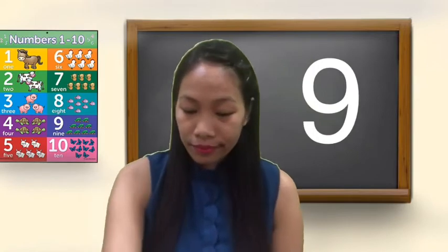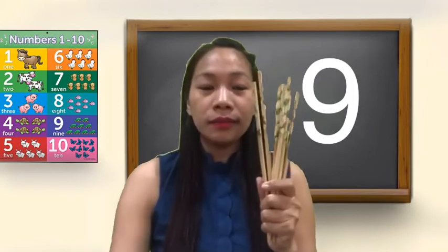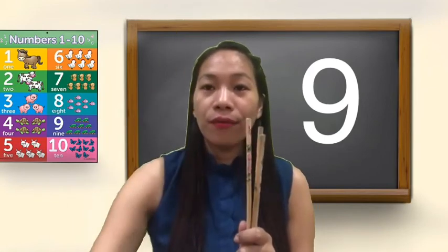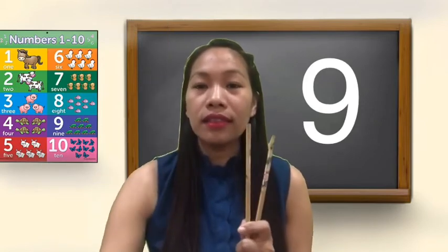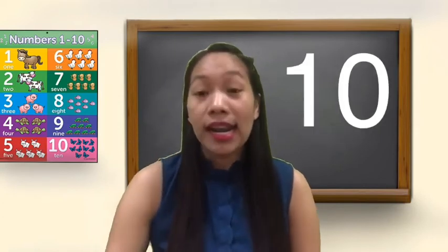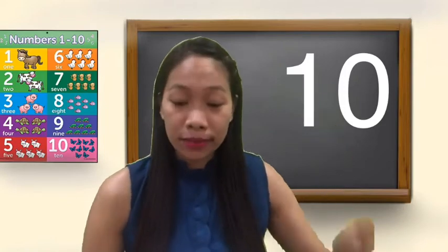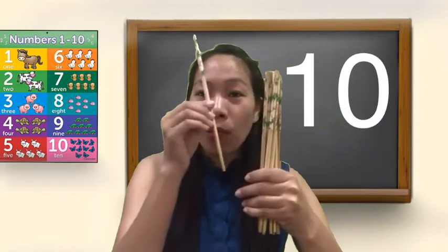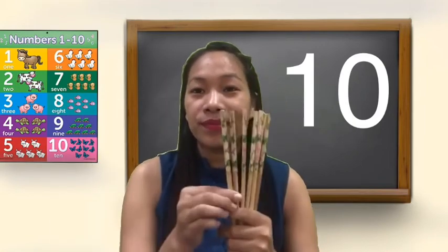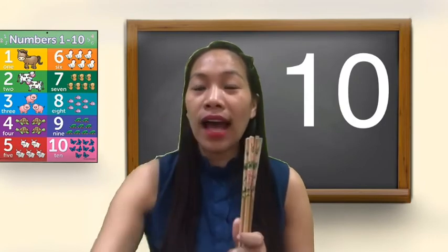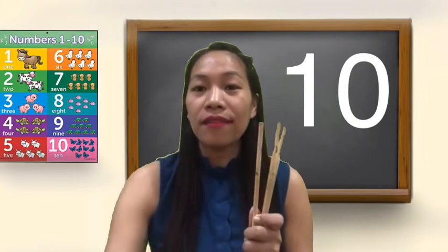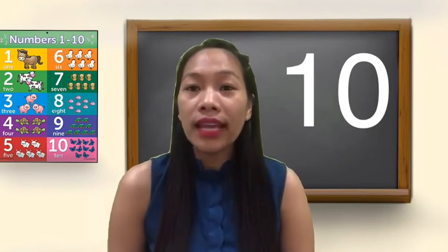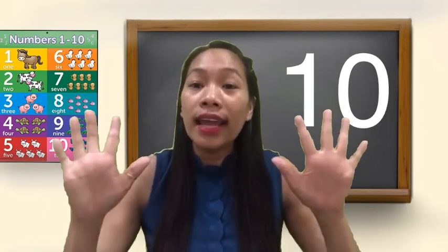9 — yes. 1, 2, 3, 4, 5, 6, 7, 8, and 9 — 9 objects. 10 — so 10 means there will be 10 chopsticks. Let us count: 1, 2, 3, 4, 5, 6, 7, 8, 9, and 10. Total 10 objects means 10. In 10, 10 objects will be there.